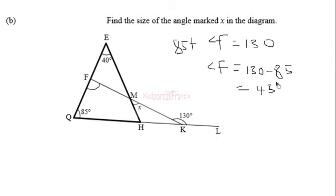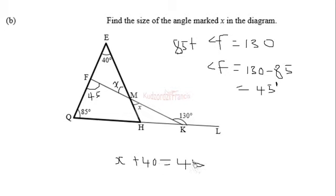We also need to find x. We can realize that this 45 degrees angle is the remote exterior angle corresponding to angle x, using vertically opposite angles. So when we add x and 40 we must get 45, from the remote exterior angle property. Therefore x plus 40 equals 45, and subtracting 40 from both sides gives x equal to 45 minus 40, which is 5 degrees.